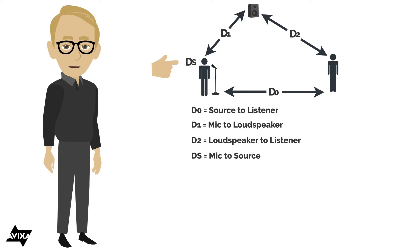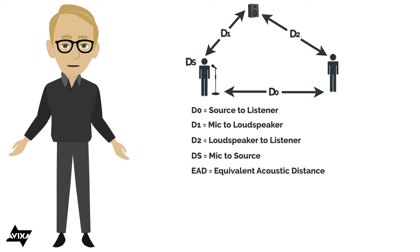There's a couple of other things that factor in here. We've got the D0, D1, D2, and DS. There's also EAD. EAD stands for Equivalent Acoustic Distance. In other words, at what distance from the source do I receive an adequate level unamplified? So how far am I away from the source? Am I still receiving an adequate level unamplified?